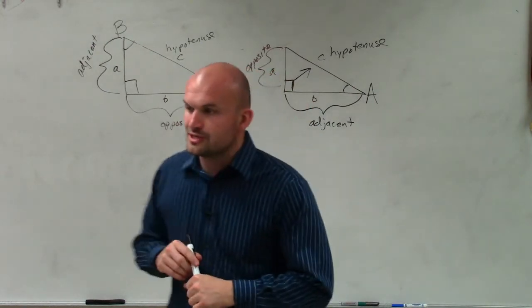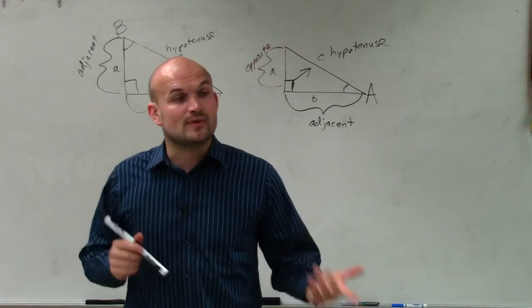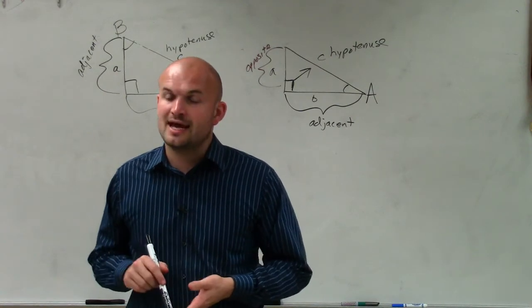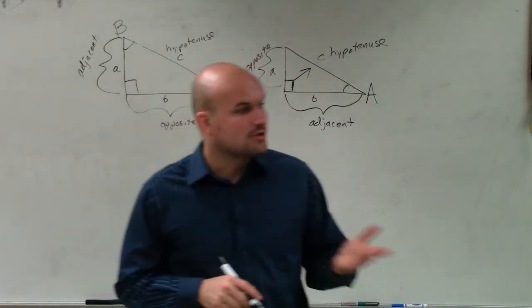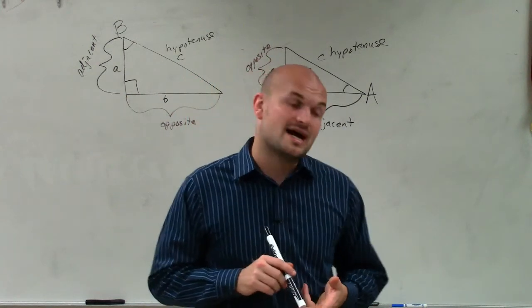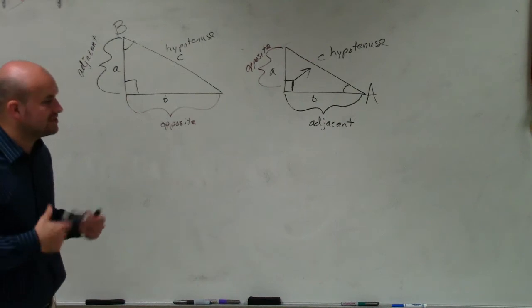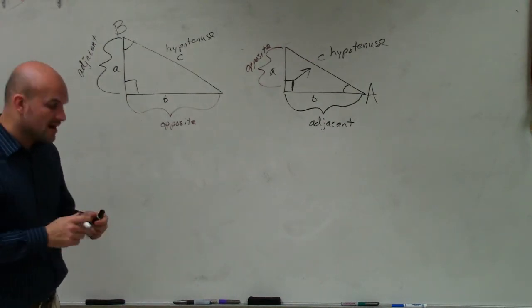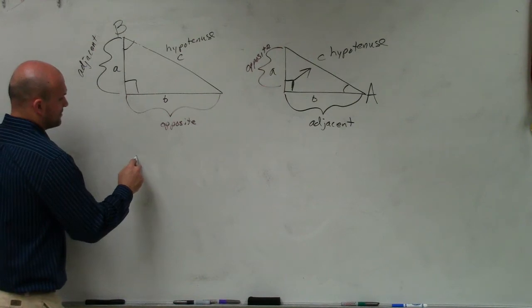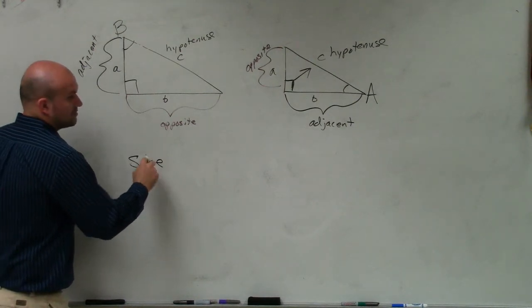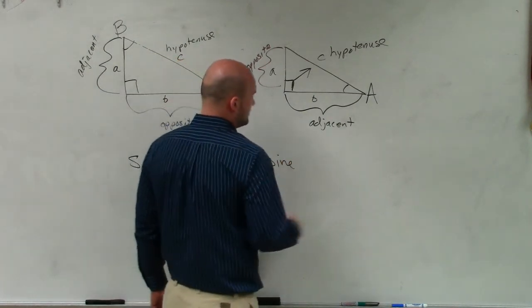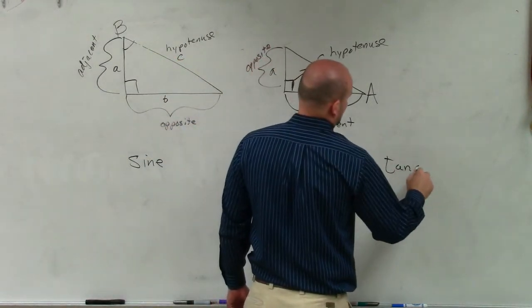So now what we're going to be doing is we're going to be using the ratio of our sides: hypotenuse, adjacent, and opposite to help us determine the length of an angle or the side of a triangle. And once we get into some word problems, or once we get into actual problems, I'll show you. But for right now, I just want to kind of go over three ratios: sine, cosine, and tangent.